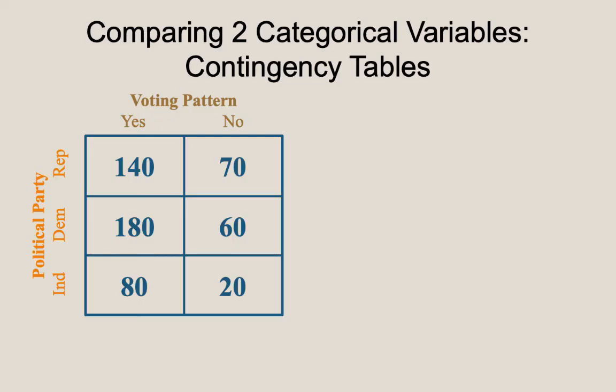Let's now fill in the values for our hypothetical example. For this observational study, we had 140 Republicans indicating they did vote in the last election, and 70 who had not voted. There were 180 Democrats who said they voted, and 60 who did not. Lastly, there were 80 Independents who said they had voted, and 20 Independents who said they had not voted. This is the data we will use for the remainder of our discussion.